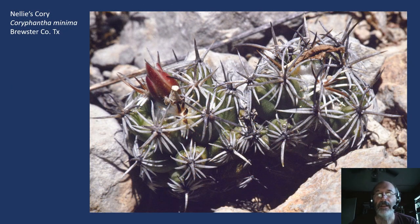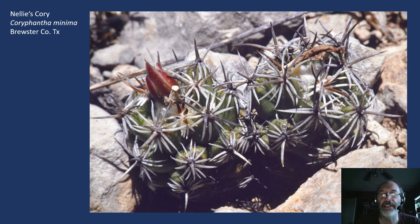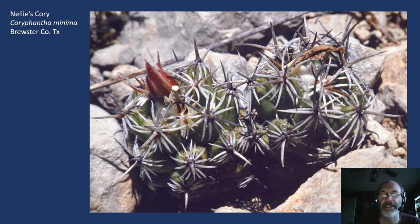Here's a real gem: Nellie's Cory, Coryphantha minima. This is found in the Marathon Basin in Brewster County in an area where the geology is made up of novaculite, a very fine-grained mineral. We find Coryphantha hesteri, Coryphantha minima, and Echinocereus davacii here — a lot of plants that have adapted to this novaculite environment. These are small, dime-sized plants and can be very hard to find. A lot of moss and selaginella grows among these rocks, and many of these little specialists grow underneath the moss — very cryptic unless they're in bloom.